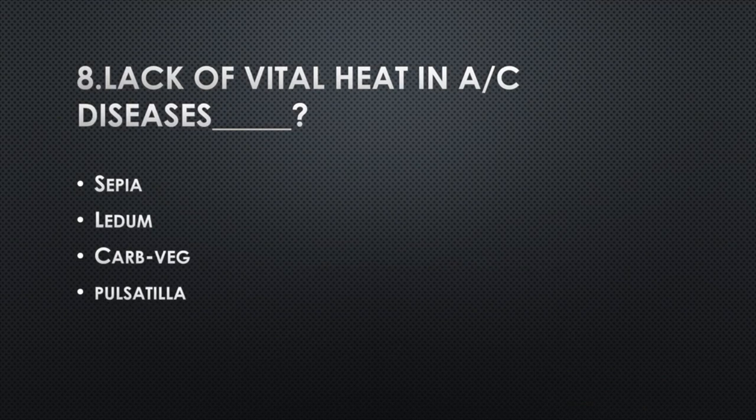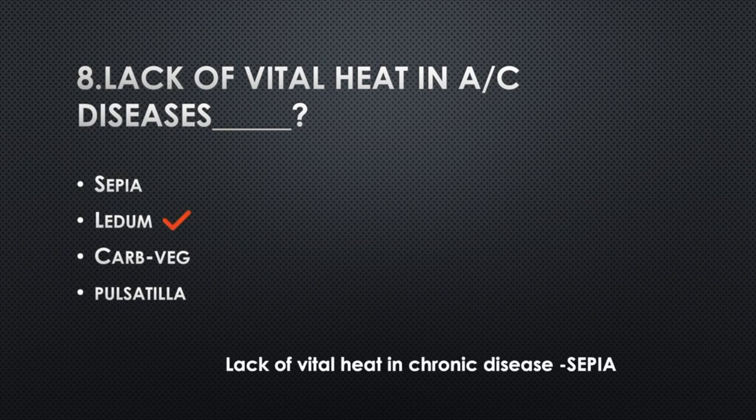Lack of vital heat in acute disease — Option A: Sepia, Option B: Ledum, Option C: Carbo veg, Option D: Pulsatilla. Answer: Option B, Ledum. Lack of vital heat in chronic disease: Sepia.